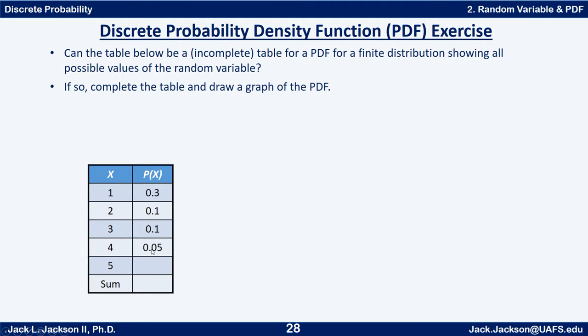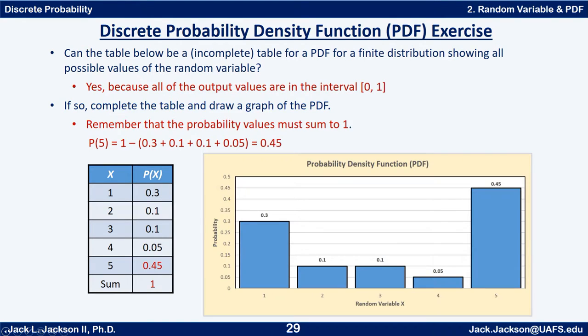If this is a legitimate PDF, all these values have to be between 0 and 1 inclusive. They are, and they have to sum to 1. If the sum is 1, we can do 1 minus 0.3 minus 0.1 minus 0.1 minus 0.05, and that turns out to be 0.45. Now if we add all these up, you do get a sum of 1.